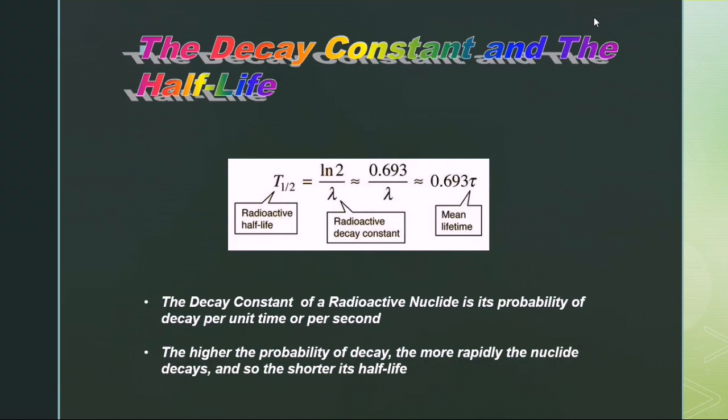The decay constant and the half-life. The decay constant of a radioactive nuclide is the probability of decay per unit time per second. The higher the probability of decay, the more rapidly the nuclei decays and the shorter its half-life.